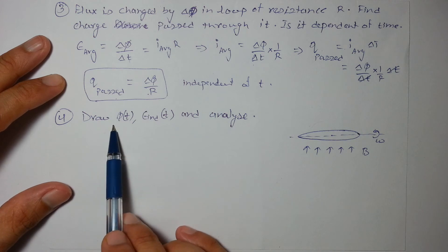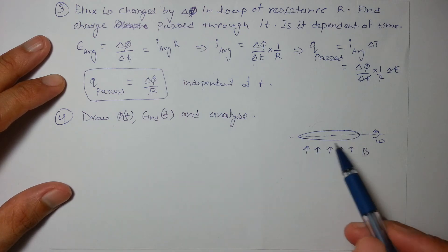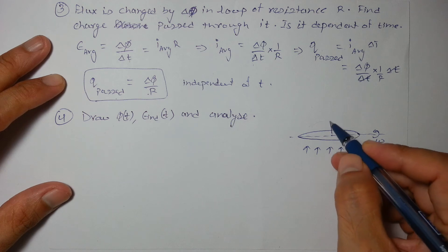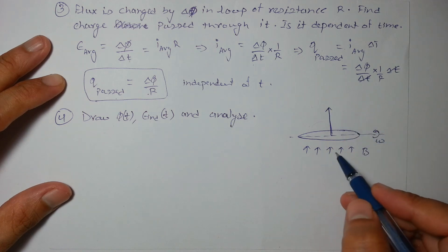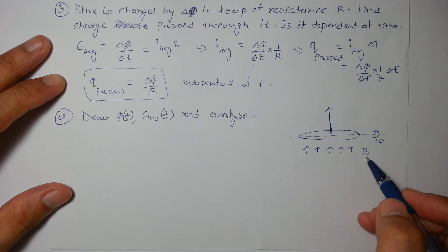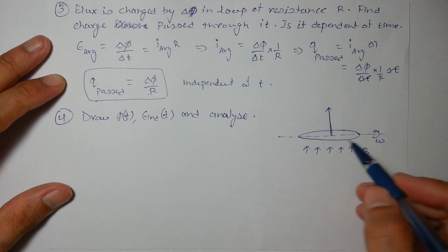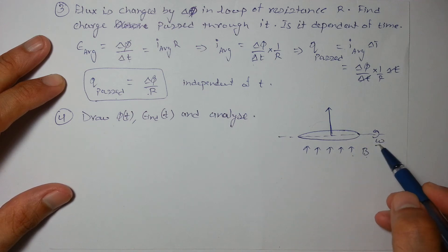In the next question there is a circular loop whose initial position is such that angle between area vector and magnetic field is 0 and it is rotated about an axis which is perpendicular to B with an angular velocity omega.